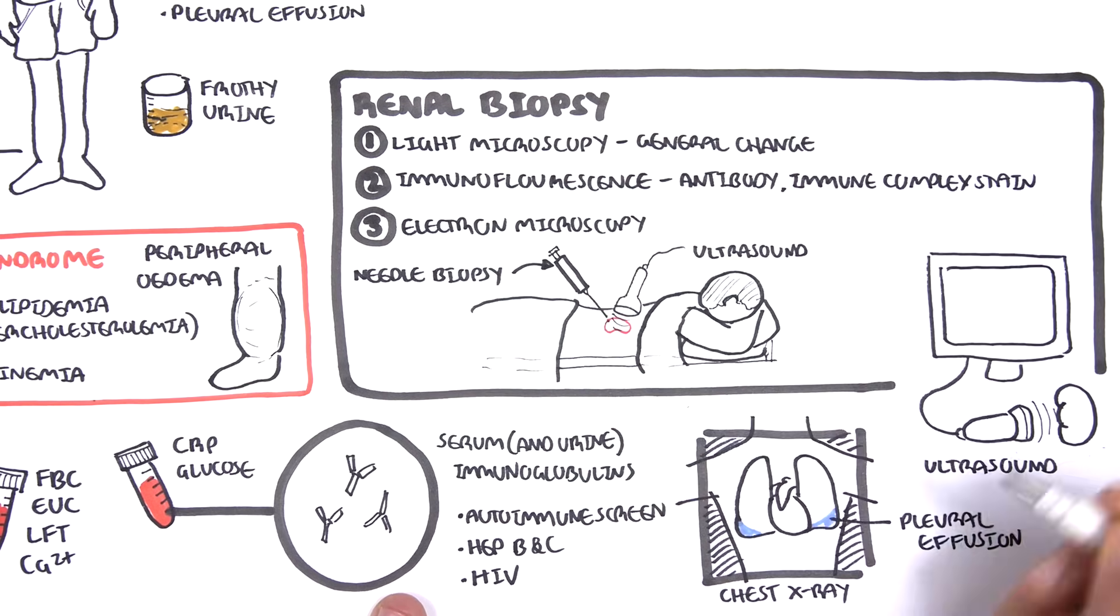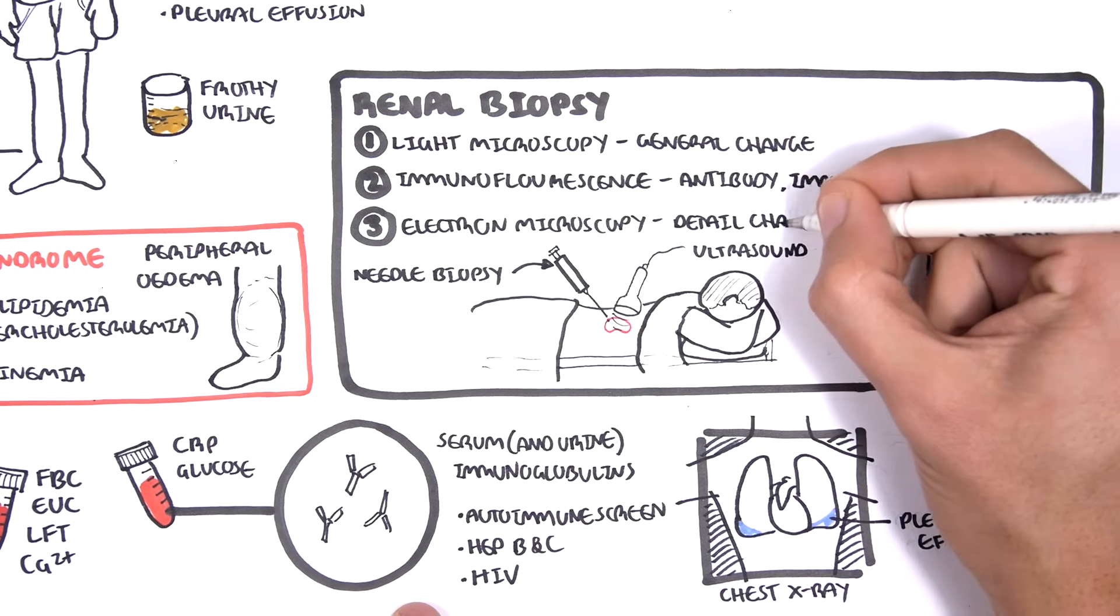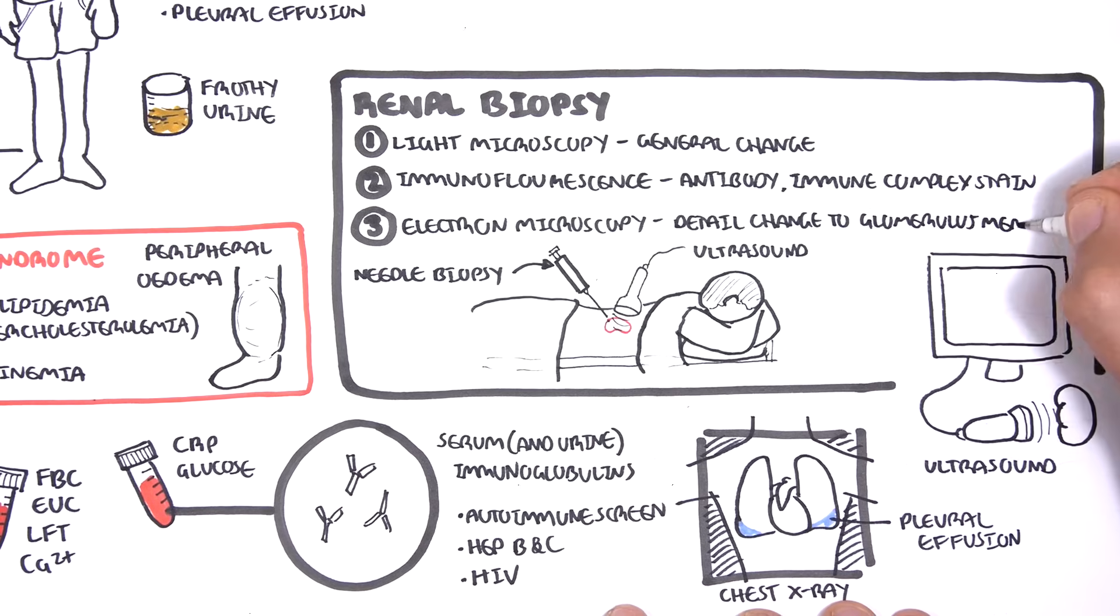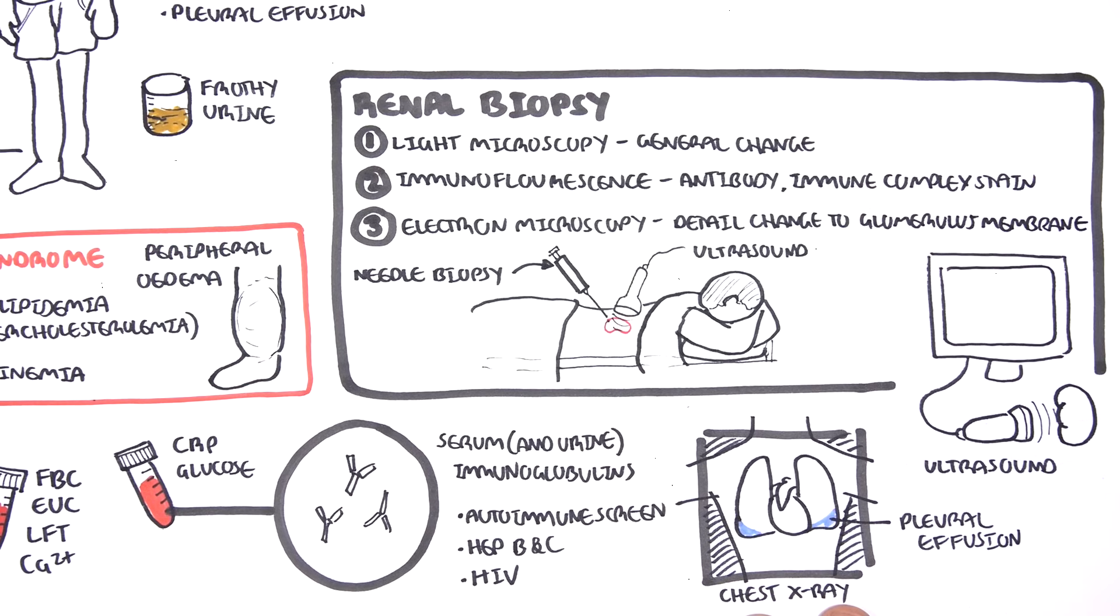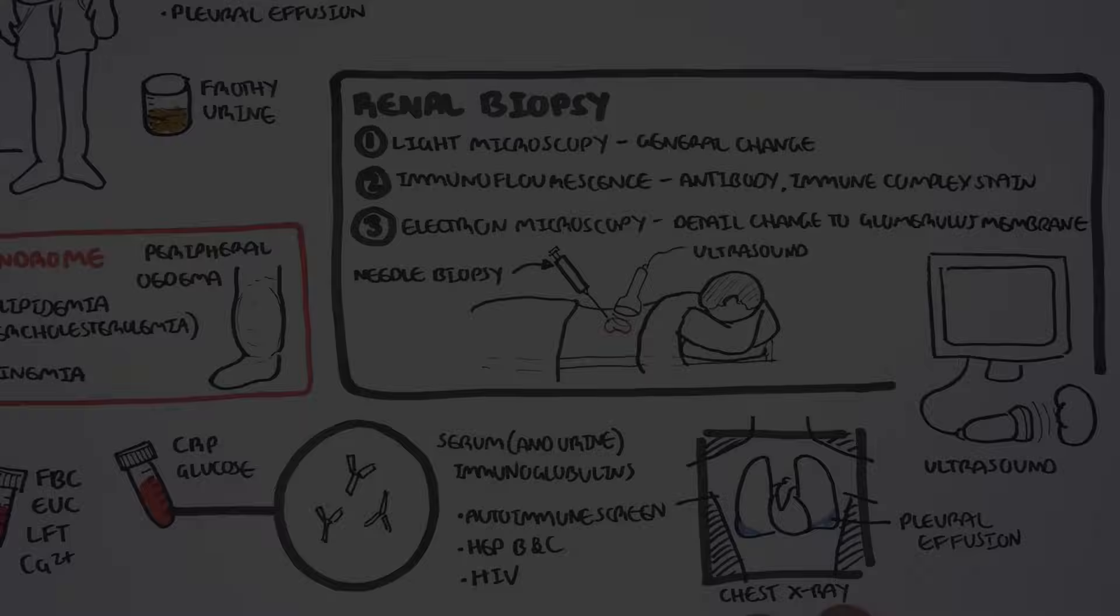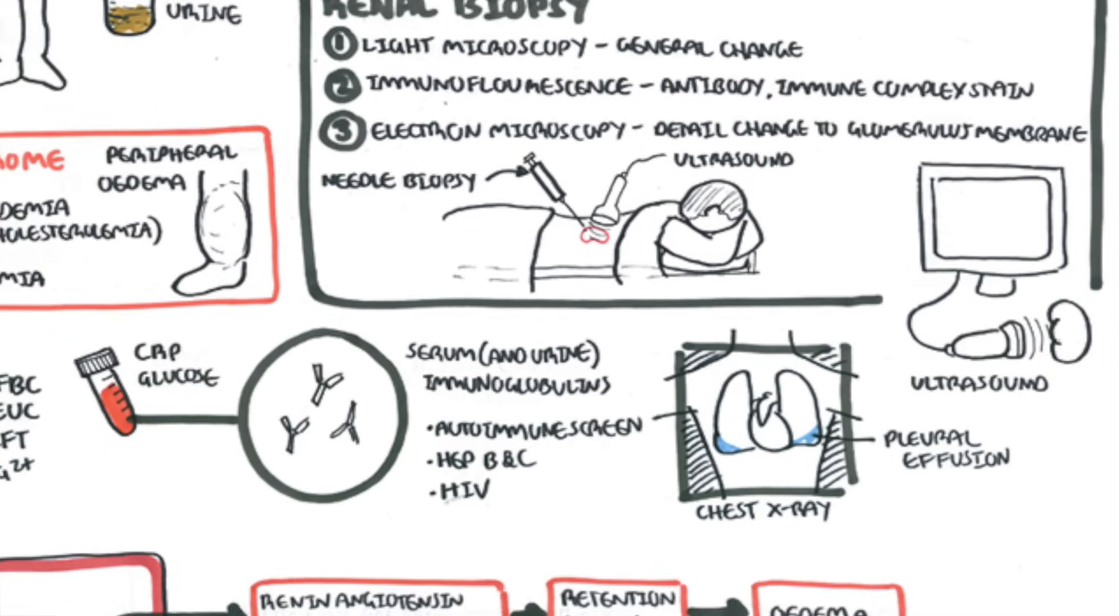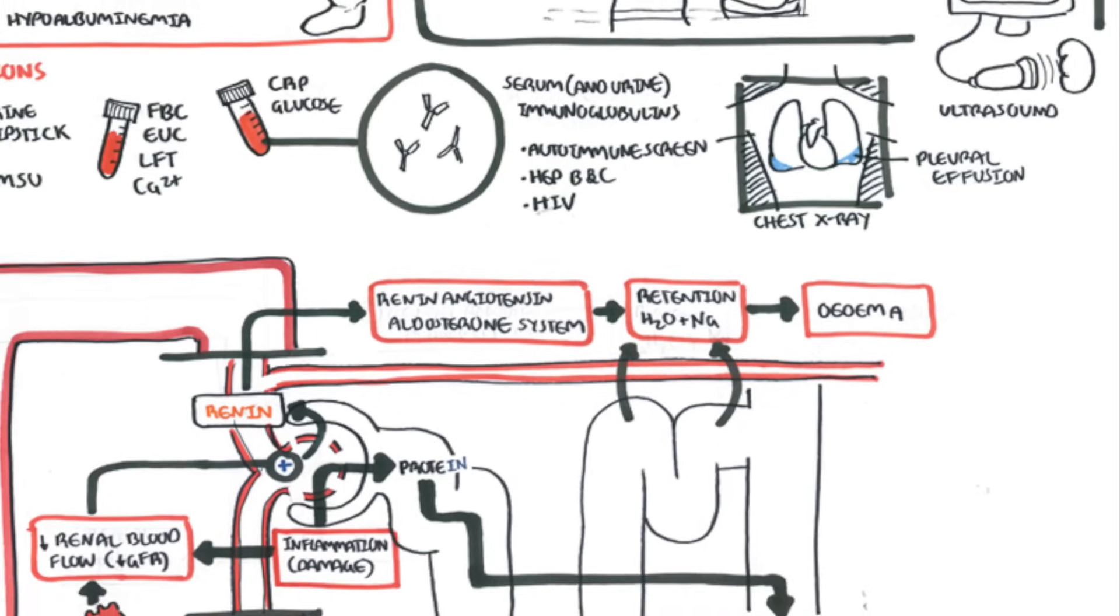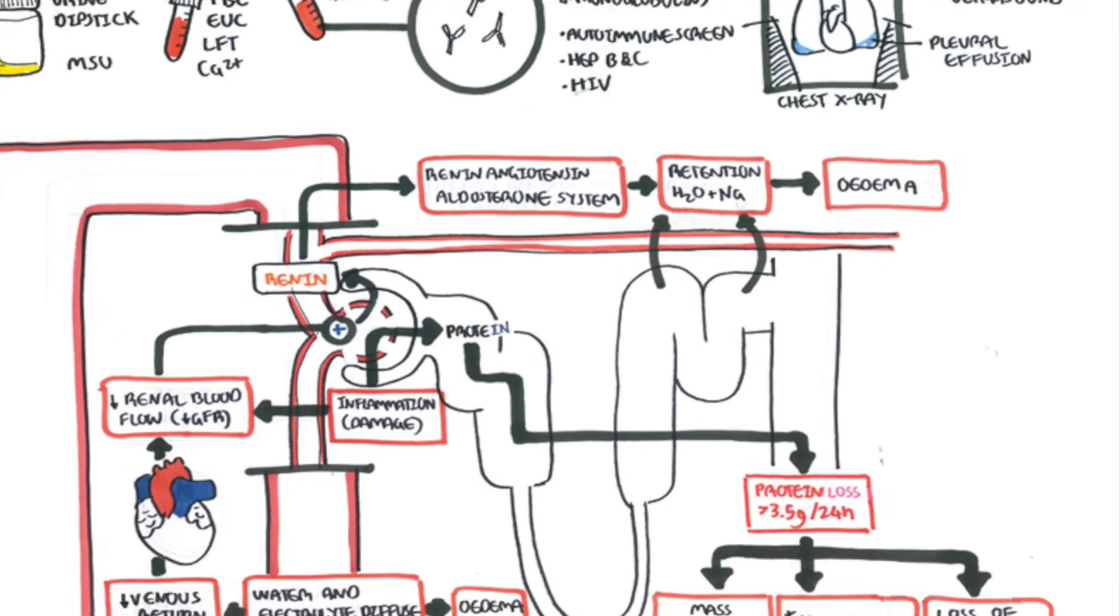Number three, electron microscopy, which looks at the detailed architecture of the glomerulus, specifically the membrane where the problems might be occurring. Finally, the management of nephrotic syndrome depends on the type and won't be discussed in this video. Thank you for watching.